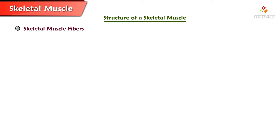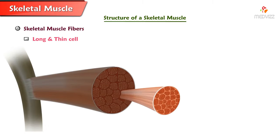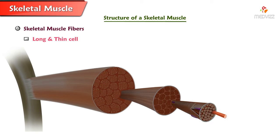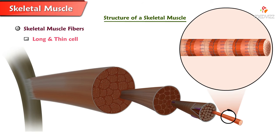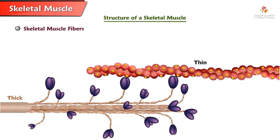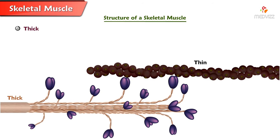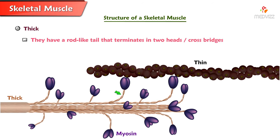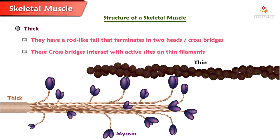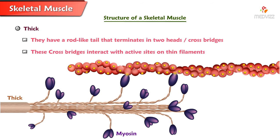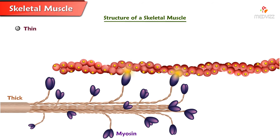Skeletal Muscle Fibers. A muscle fiber is a long, thin cell. Each muscle fiber is composed of myofibrils. Each myofibril is composed of two protein filaments. Thick filaments are primarily composed of the protein myosin; they have a rod-like tail that terminates into two globular heads or cross-bridges. These cross-bridges interact with active sites on thin filaments, which are primarily composed of the protein actin.